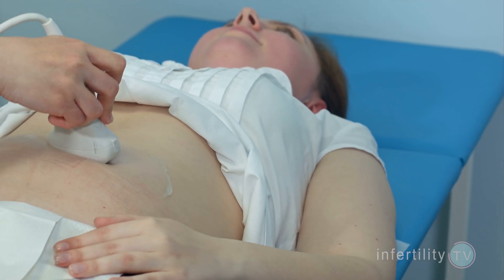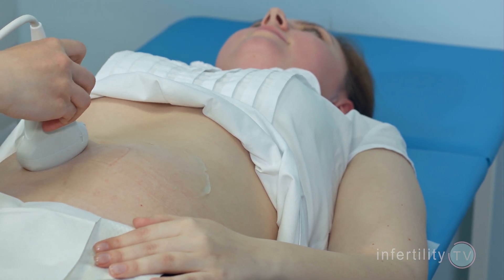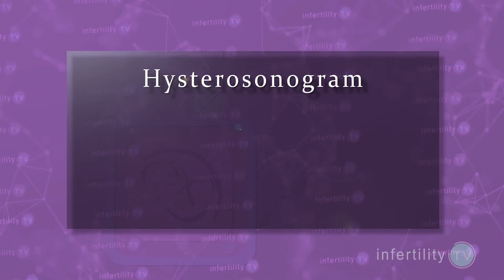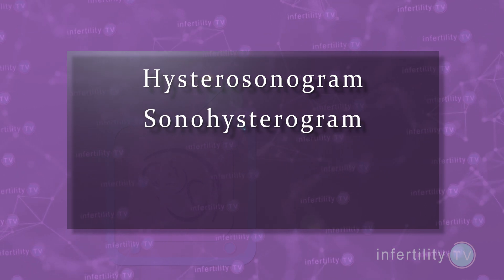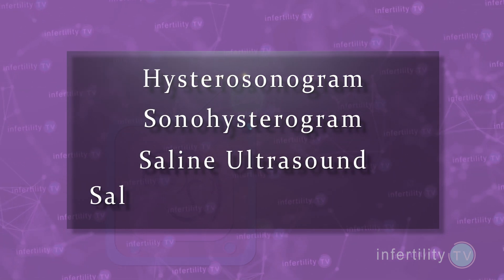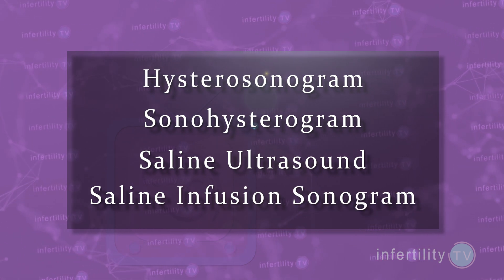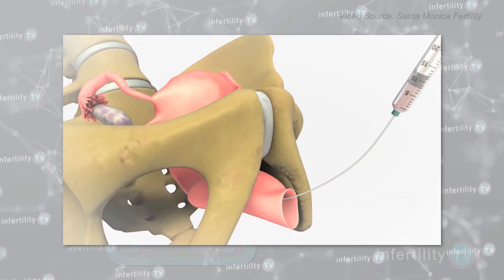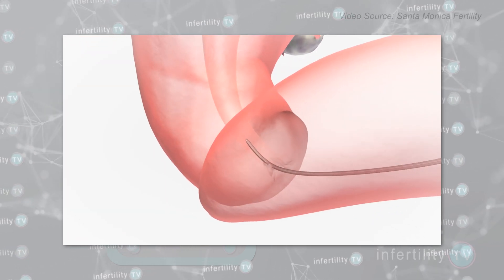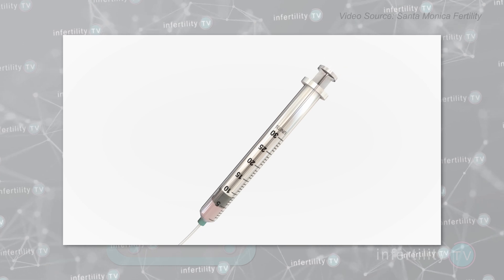The second technique uses ultrasound instead of x-ray. It goes by many names including hysterosonogram, sonohysterogram, saline ultrasound, or saline infusion sonogram. Saline is the medical term for salt water. It starts out the same way as an HSG — a catheter is placed into the uterus and fluid is squirted into the uterine cavity.